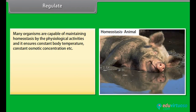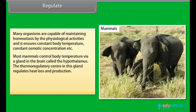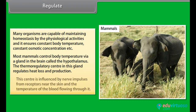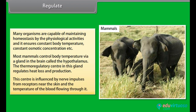Regulate: Many organisms are capable of maintaining homeostasis through physiological activities, ensuring constant body temperature and constant osmotic concentration. Most mammals control body temperature via a gland in the brain called the hypothalamus. The thermoregulatory center in this gland regulates heat loss and production, and is influenced by nerve impulses from receptors near the skin and the temperature of the blood flowing through it.